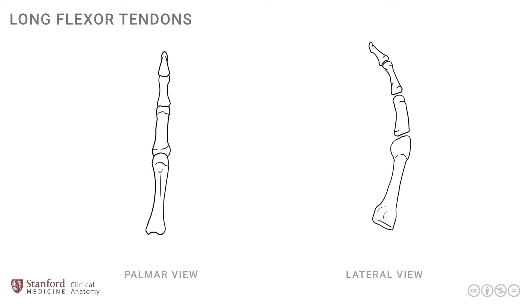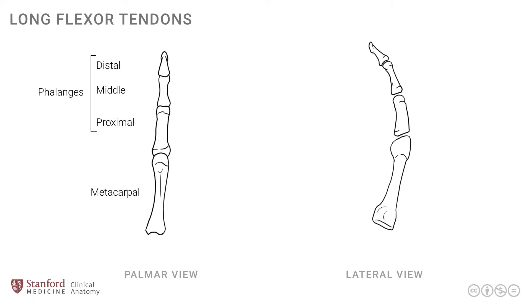In this lesson we will review the anatomy of the long flexor tendons that go into each of the fingers. Let's start by looking at a simple line drawing of a representative digit. The left-sided image is the palmar view and the image on the right side of the screen is the lateral view of the same digit. To get ourselves oriented, we have the distal, middle, and proximal phalanges, and then the metacarpal at the base.